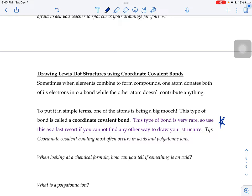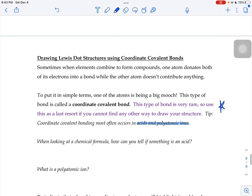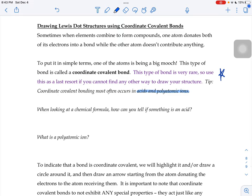Just a little tip as to when you might see that coordinate covalent bonding, since it is rare, it does happen most often in acids and polyatomic ions. You learned in your periodic table trends lab that when something was an acid,